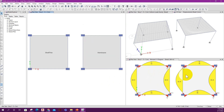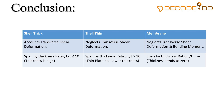Conclusion: shell thick accounts for transverse shear deformation. Shell thin neglects transverse shear deformation. Membrane neglects transverse shear deformation and bending moment. Shell thick has L/T ratio equal to or less than 10 — high thickness. Shell thin has L/T ratio greater than 10 — lower thickness. For membrane, the L/T ratio is almost equal to infinity, meaning thickness tends to zero — a very thin layer that does not have any bending stiffness.